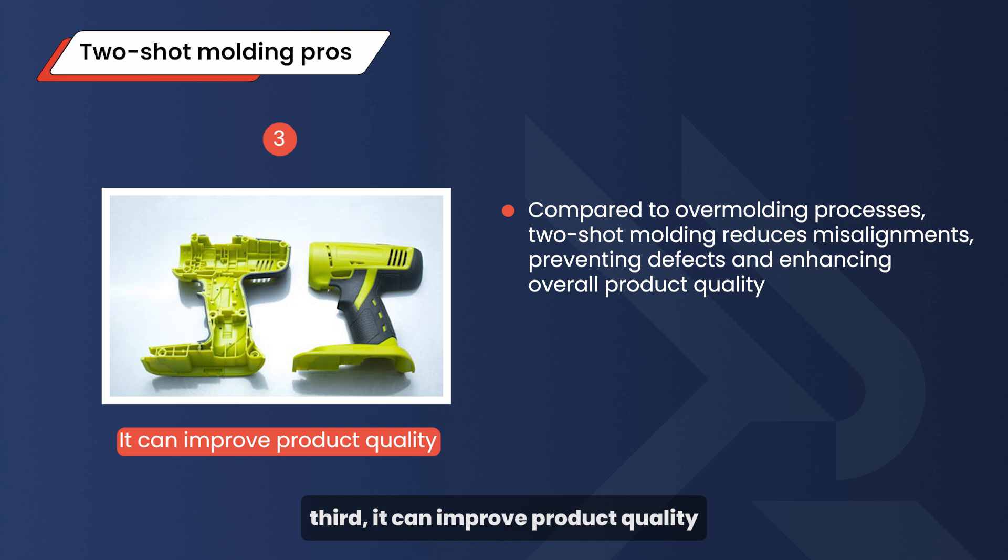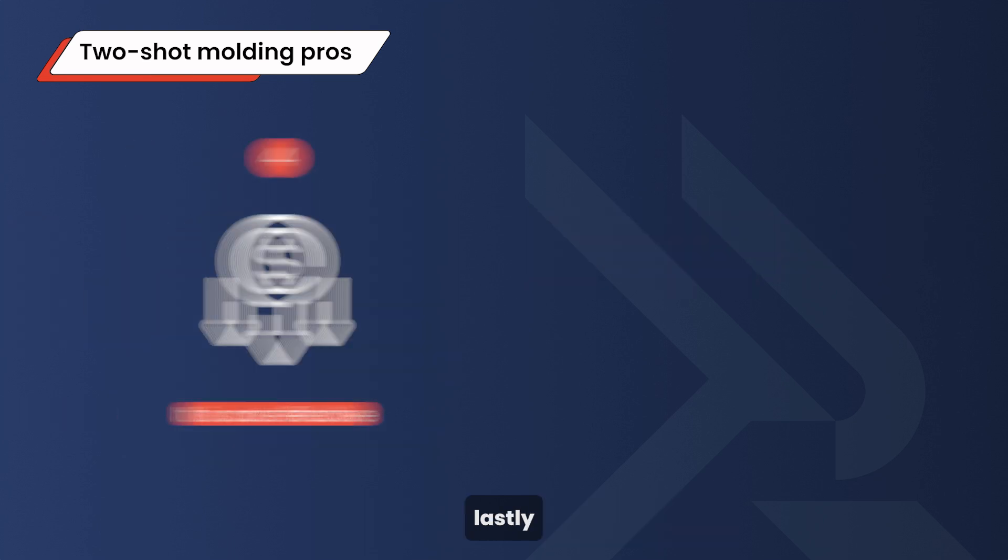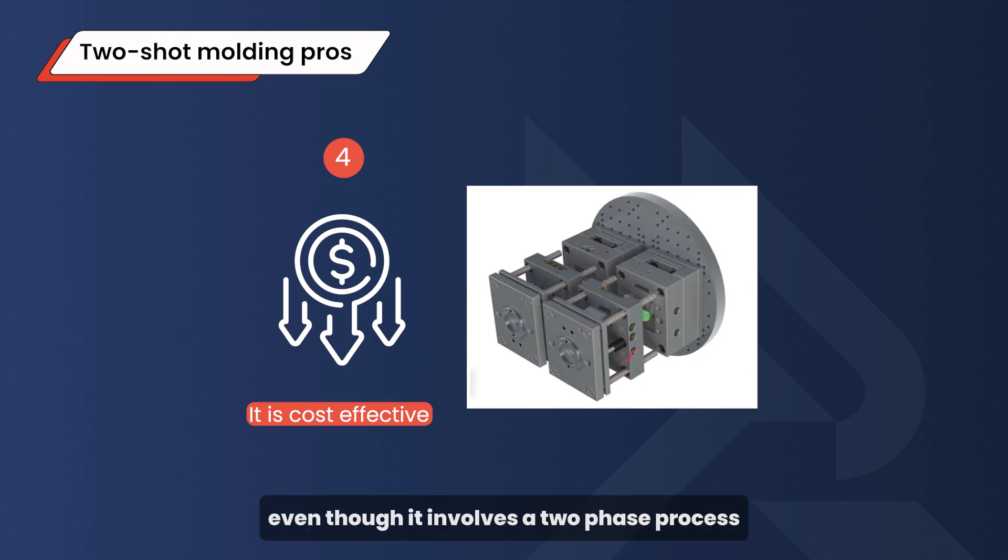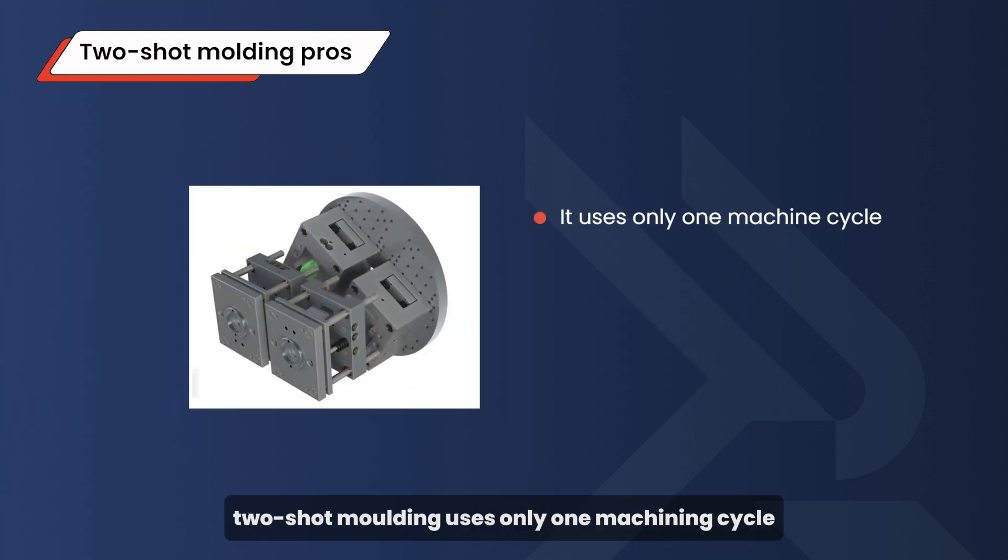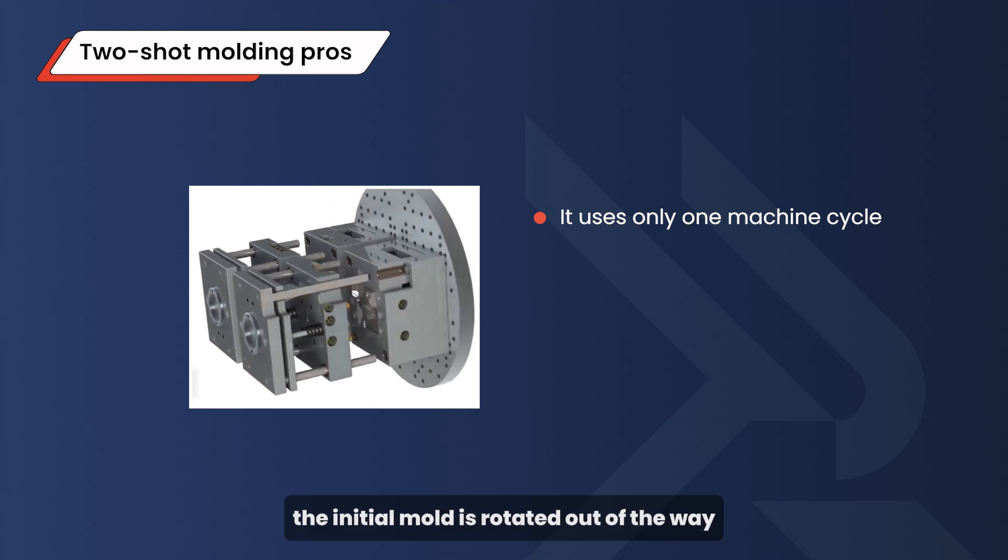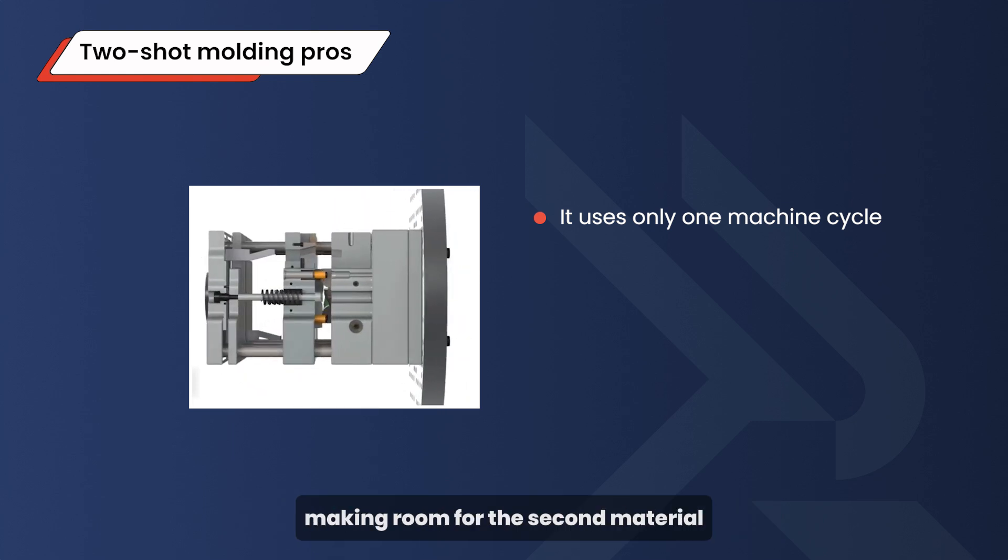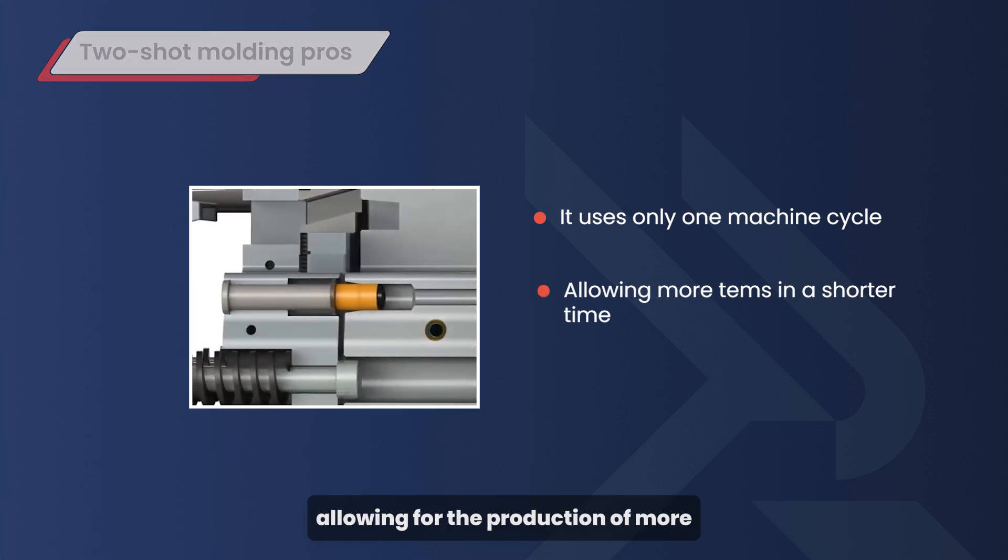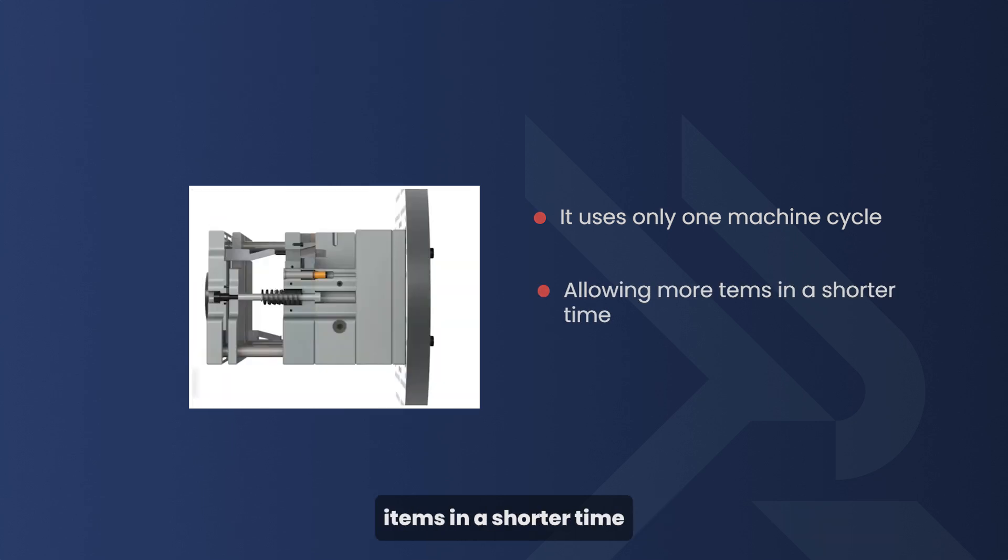Third, it can improve product quality. Compared to overmolding processes, two-shot molding reduces misalignments, preventing defects and enhancing overall product quality. Lastly, you cannot ignore the cost effectiveness it brings. Even though it involves a two-phase process, two-shot molding uses only one machining cycle. The initial mold is rotated out of the way, making room for the second material. This efficiency means fewer costs and labor requirements, allowing for the production of more items in a shorter time.